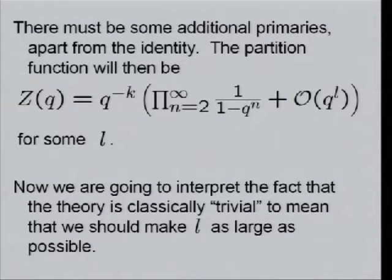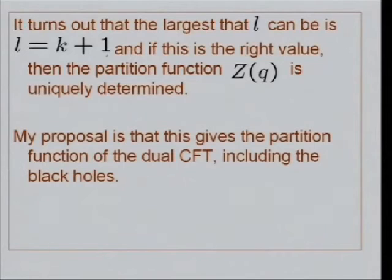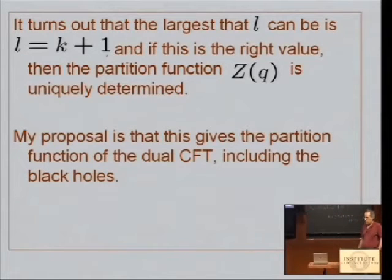So there have to be some additional states, which in the lingo means there have to be some additional primary fields other than the identity. And the partition function is not going to be the function I wrote. It will begin that way because near the vacuum, Brown and Henneaux already described all the excitations of the vacuum. So it will begin this way, but at some point there will be more states. And we're going to interpret the fact that this theory is classically trivial to mean we should make L as large as possible. As far as the near anti-de Sitter space, there was nothing except these states. We have to add something else, but we're going to push it up as far as we can. It turns out that the largest you can make L is k+1, and if this is the right value, then the partition function is uniquely determined. And my proposal is that this gives the partition function of the dual conformal field theory, including the black holes.